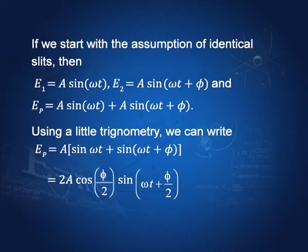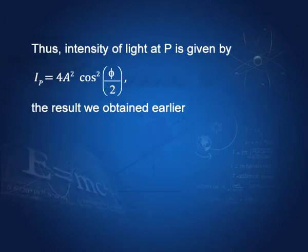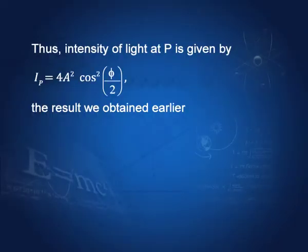Alternatively, one can directly add Ep = A·sin(ωt) + A·sin(ωt + φ) assuming the same amplitude for both waves. The trigonometry is straightforward and again yields Ip = 4A²·cos²(φ/2). Whichever way you proceed, the intensity at point P on the screen is 4A²·cos²(φ/2), where A is the amplitude of each wave from the slits and φ is the phase difference.